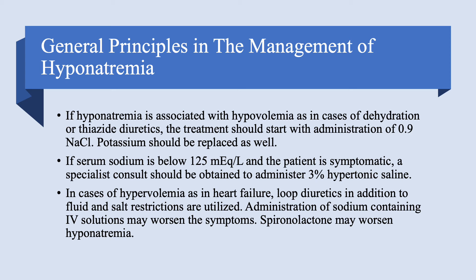For hyponatremia with hypervolemia — such as in heart failure or liver cirrhosis — we use loop diuretics, because we're not going to give fluids to patients who are already fluid overloaded. We're not going to give saline or 3% saline. We use loop diuretics and restrict both fluid and salt, because although total body sodium is up, the water increase exceeds the sodium increase.